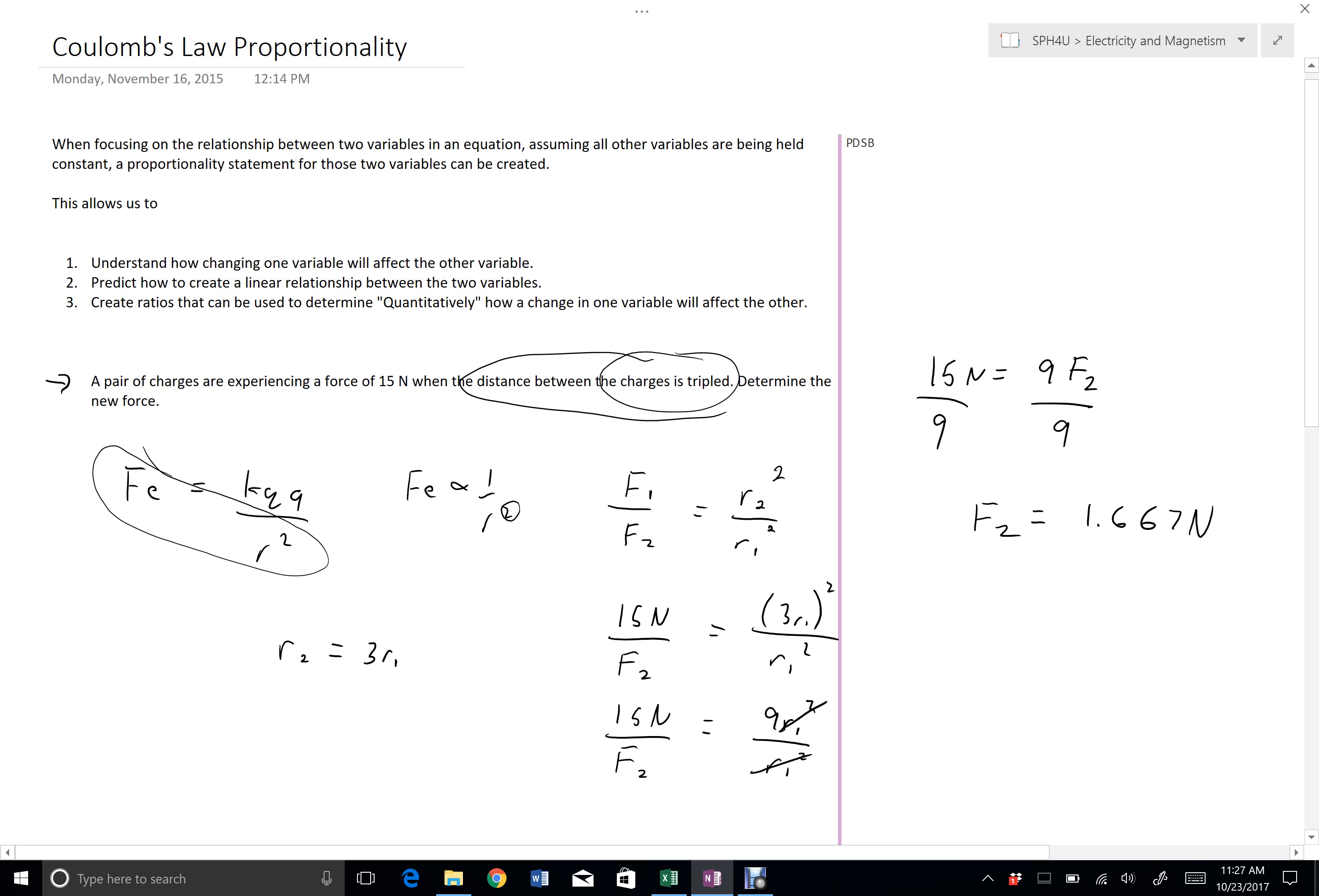And so again, I can qualitatively see how one variable will affect the other variable, while ignoring the rest of the equation. I can use it to quantitatively predict how changing the variable can affect the overall force. Or finally, I can use it to predict what relationship I could graph to get a straight line given the data. And that allows me to verify that relationship with the actual experimental data.